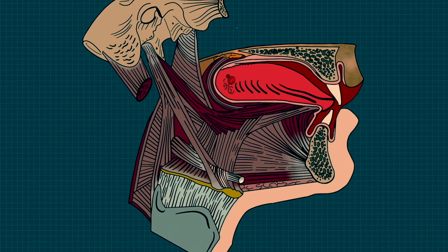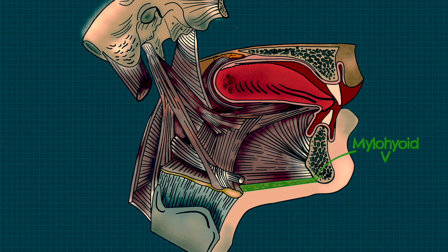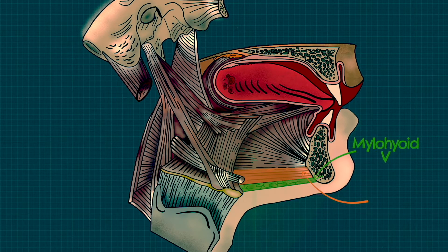Now we've covered all the muscles of the floor of the mouth and extrinsic muscles of the tongue, it's time to cover their innervations. First, let's cover the mylohyoid, which is outlined here in green. This is innervated by cranial nerve 5, also known as the trigeminal nerve.